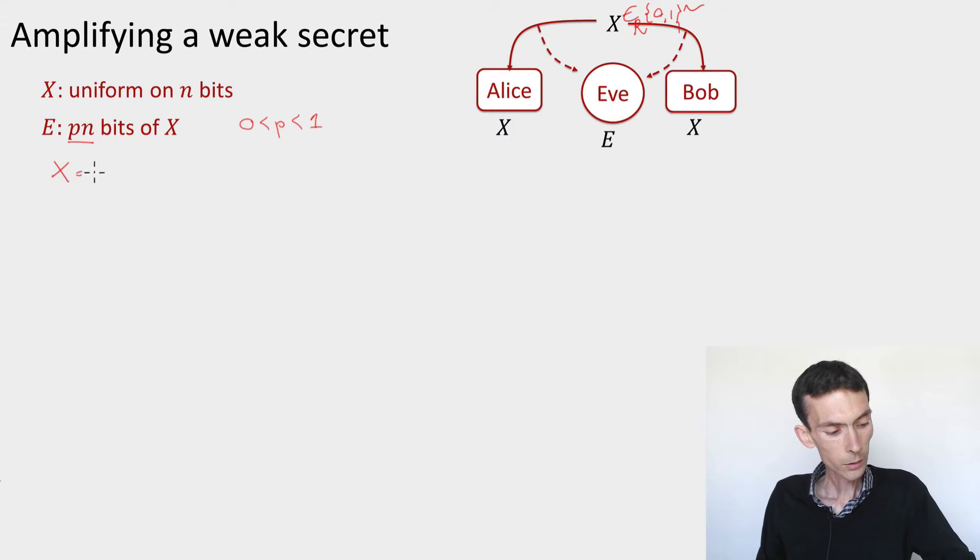So this string x, you can write it down as x_1, x_2, x_3, etc., up to x_{n-1}, x_n. And think of the side information as being either a blank symbol when the bit x has not been stored, or a copy of the bits.